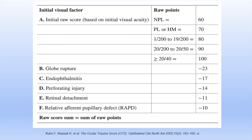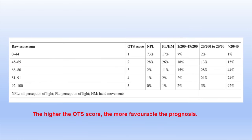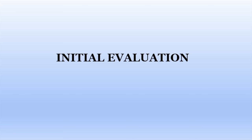The Ocular Trauma Score (OTS) was developed to predict prognosis. Scoring is based primarily on visual acuity, and factors like globe rupture and endophthalmitis that decrease visual prognosis are deducted from the raw visual acuity score. The higher the OTS score, the more favorable the prognosis. When the score is 0 to 44, the chance of no light perception is 73%; when the score is up to 100, visual acuity better than 20/40 is expected in 92% of cases. Initial evaluation is very important for fellows and SRs posted in the emergency department.